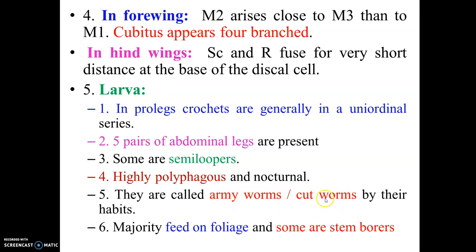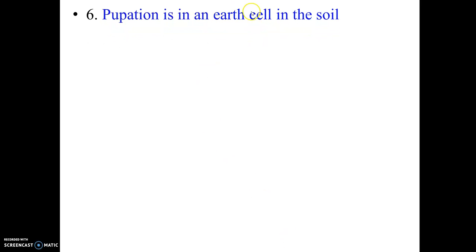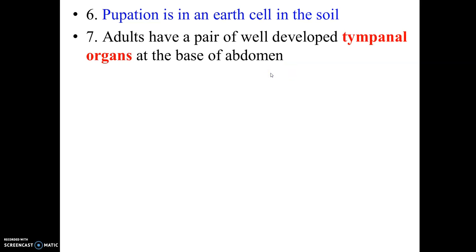The larvae are known as army worms or cut worms because they develop in large numbers and migrate from one place to another like an army. They cut branches or seedlings, feed on foliage, and some are stem borers also. Pupation takes place mostly in the soil. Adults also have well-developed tympanic auditory organs.